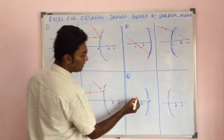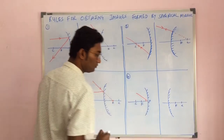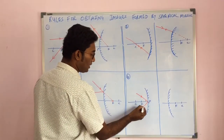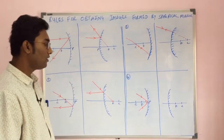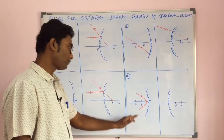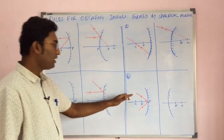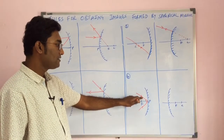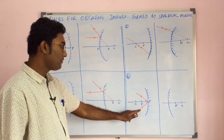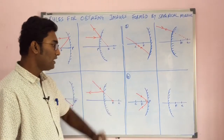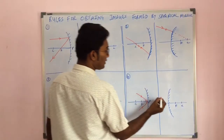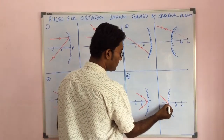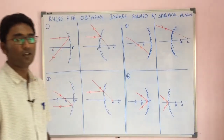The fourth rule says that if a light ray is incident at the pole, it gets reflected such that the angle of incidence equals the angle of reflection. The angle made between the principal axis and the incident ray is exactly equal to the angle made by the reflected ray and the principal axis. The same rule applies in the case of a convex mirror.